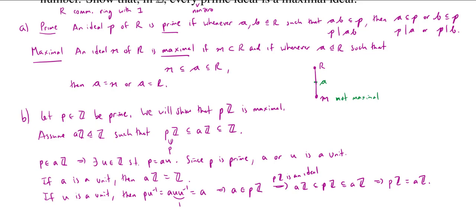So there are two situations. Either A is a unit or U is a unit. And in the first situation, we get that AZ is the entire ring. And in the second situation, we get that AZ is equal to PZ. And that is precisely what we're looking for in order to show that an ideal is maximal. So we have just concluded that PZ is maximal. And there's our proof. Excellent. We'll see everybody next time. Thank you.